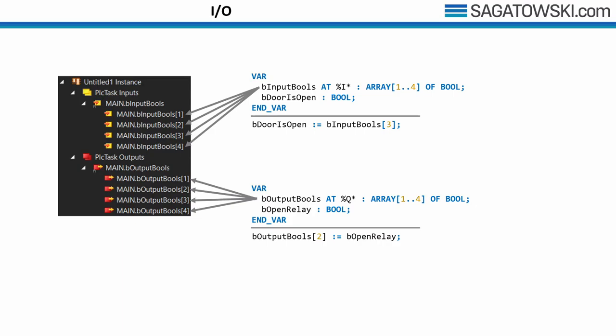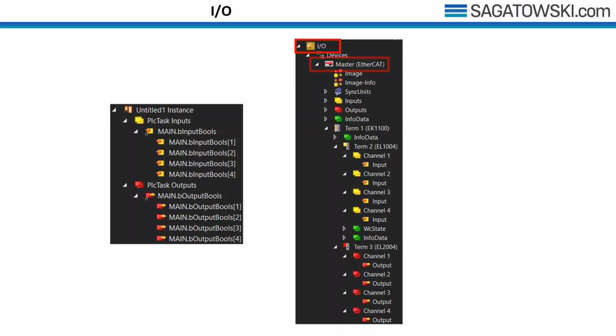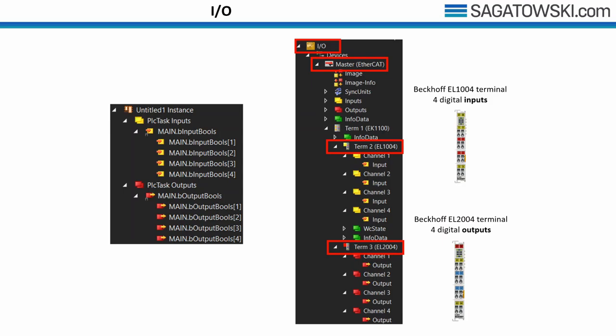The final step to close the loop is to link the variables to the actual hardware. All real-time capable hardware is presented in the IO object in the TwinCAT solution. This requires an EtherCAT master where we can define our terminals — in this case the EL1004 and EL2004. These two objects represent the actual physical devices. Inputs are shown with a yellow icon and outputs with a red icon on both sides — in our code and in the IO tree.